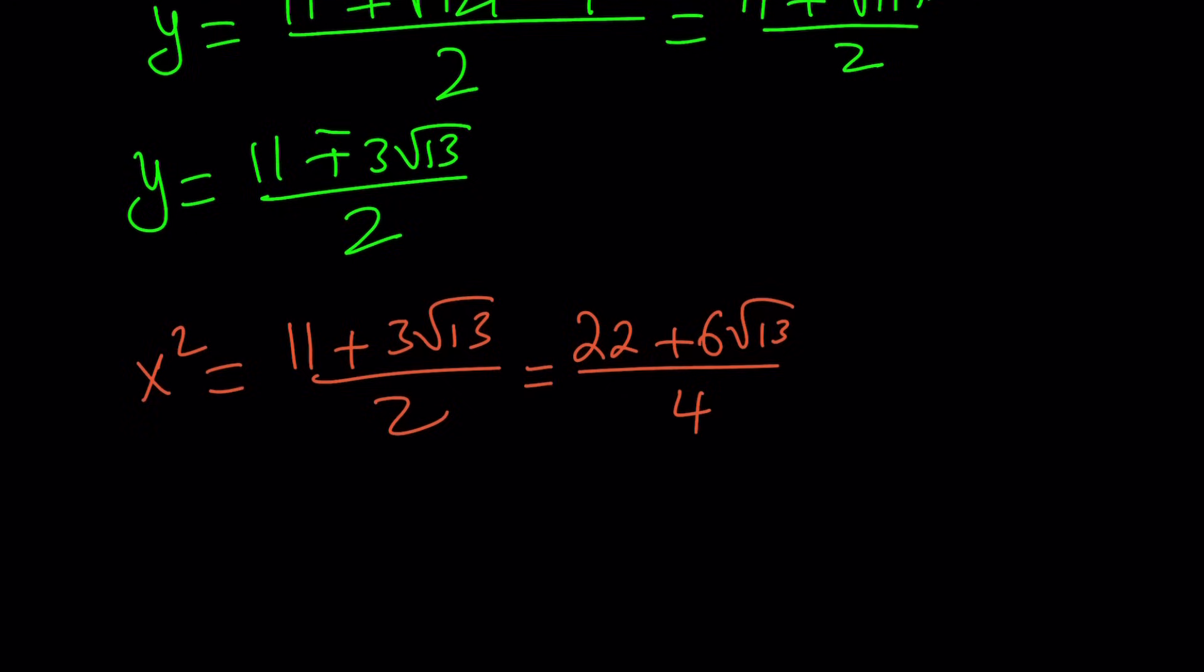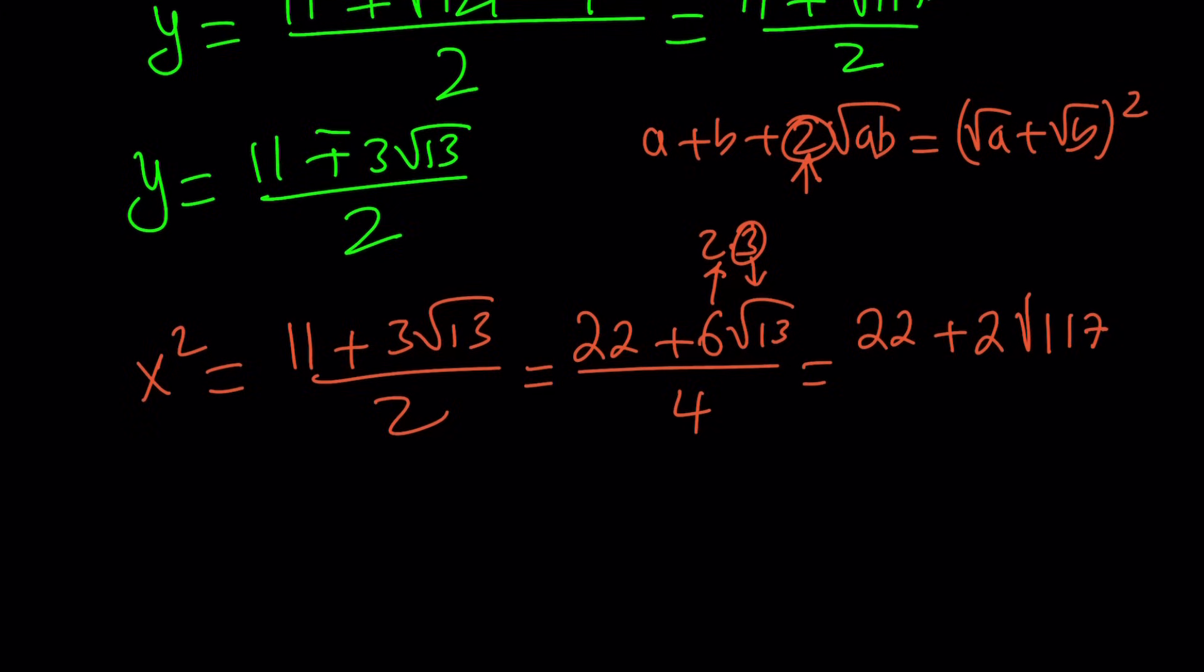And then, when I have an expression like a plus b plus 2 root ab, I hope you noticed that this is square root of a plus square root of b squared. So I want to get a 2 in front of my radical. But I have a 6, so what can I do? Break it down into 2 times 3, and then throw the 3 inside as a 9. So this is going to become 22 plus 2 times the square root of 13 times 9. That comes from the 3 that's outside. And that's going to become 117 again.